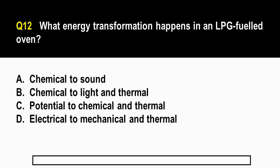Question number 12. What energy transformation happens in an LPG-fueled oven? A. Chemical to sound. B. Chemical to light and thermal. C. Potential energy to chemical and thermal. And letter D. Electrical to mechanical and thermal.